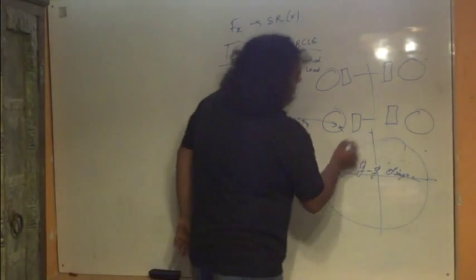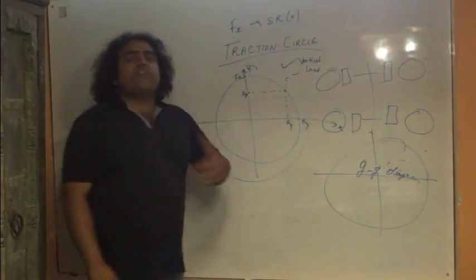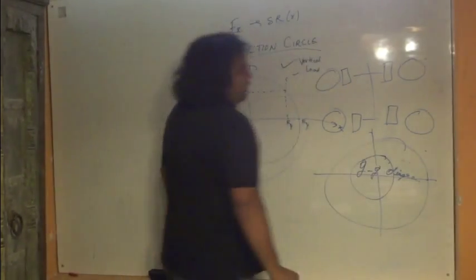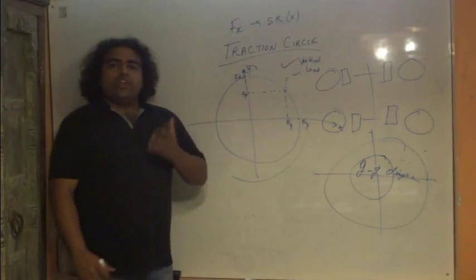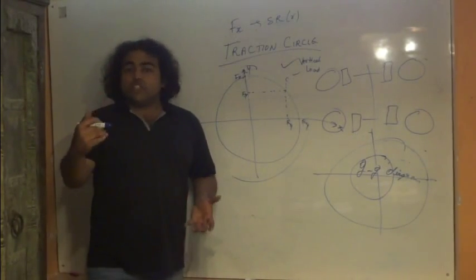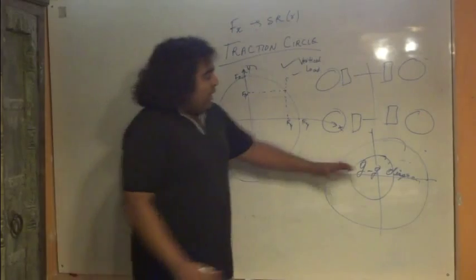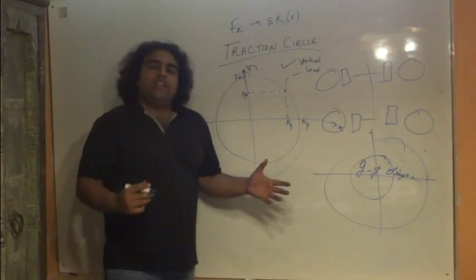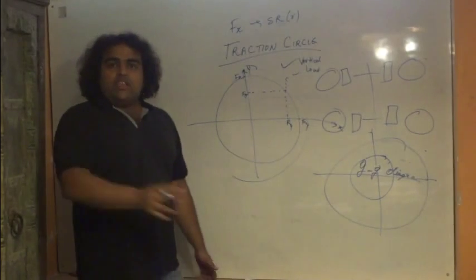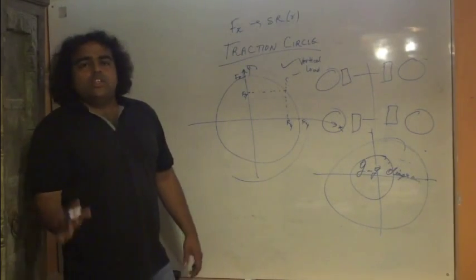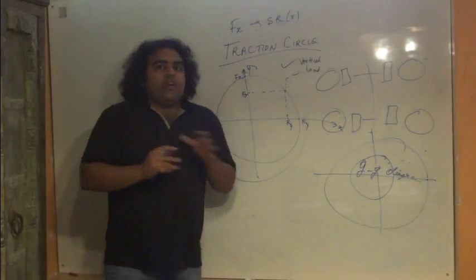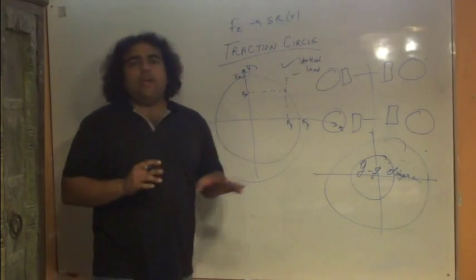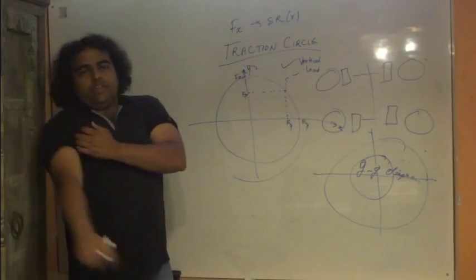Your aim will be to maximize this GG diagram — to give your driver more space to drive. If my GG diagram is very small, then every time the driver goes into a corner and hits the gas he is going outside the GG diagram, and the car is not performing well. If I can increase this GG diagram, the driver has more space to drive — he can go into the corner fast and come out of it fast. Generally, all of circuit racing is dictated by how fast you can go in and out of corners.